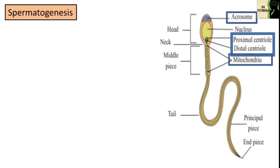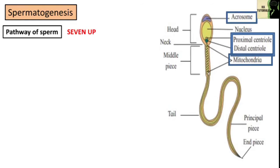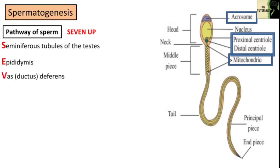Let's talk about the pathway of sperm in the male reproductive system. There is a trick to remember it — it's called '7-UP.' The path is as follows: seminiferous tubules of the testis, epididymis, vas deferens, ejaculatory duct, urethra, and penis.